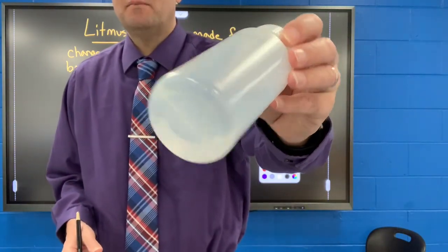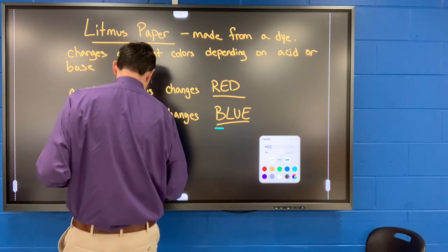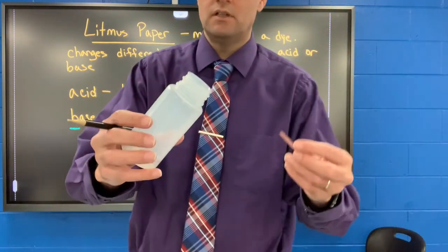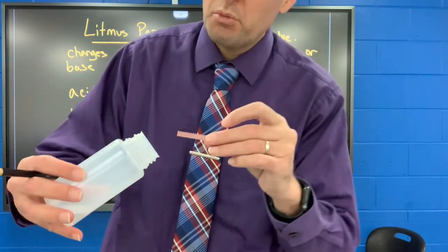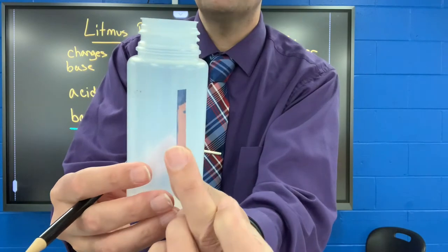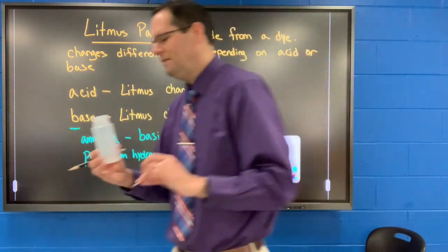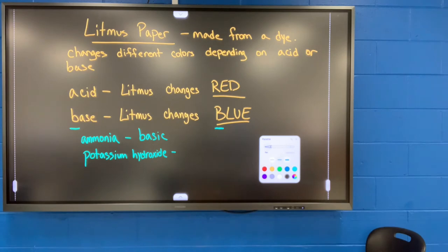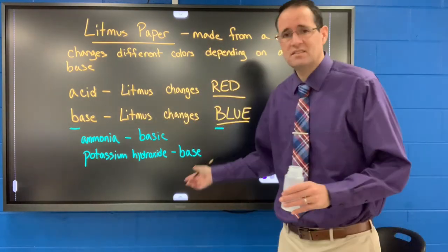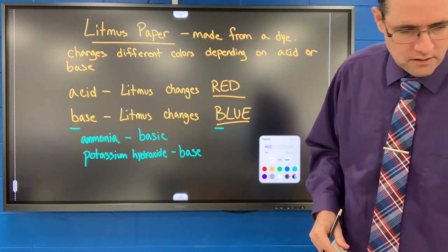This next chemical is potassium hydroxide. Here's the litmus paper — a pink color. I'll dip that in. That changed to a blue color as well. The tip of the litmus paper has changed blue. B is for blue, B is for base — so potassium hydroxide is a base. Basic is the adjective; base is the noun.